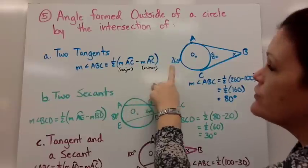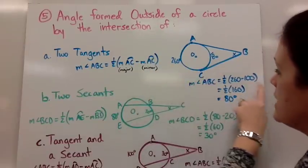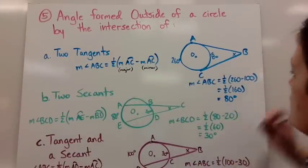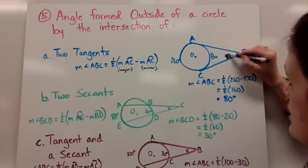So half of 260 minus 100 is half of 160, which is 80 degrees. So x would be equal to 80 degrees.